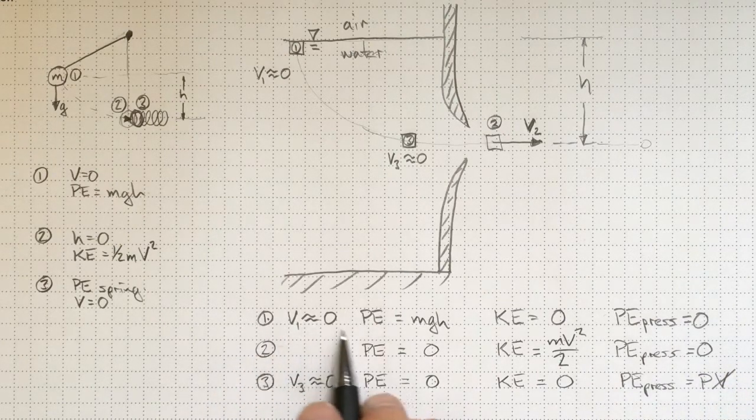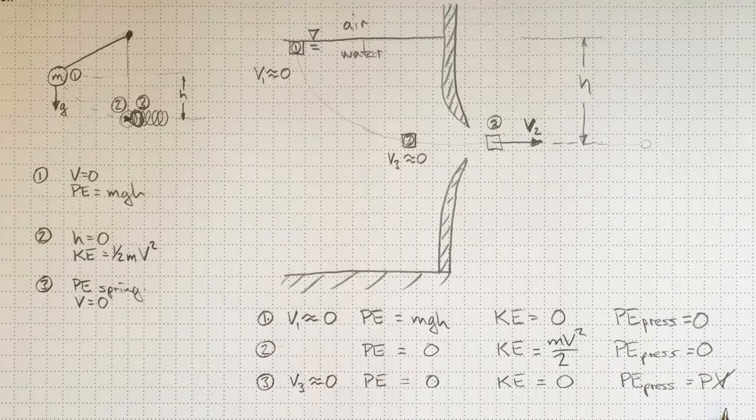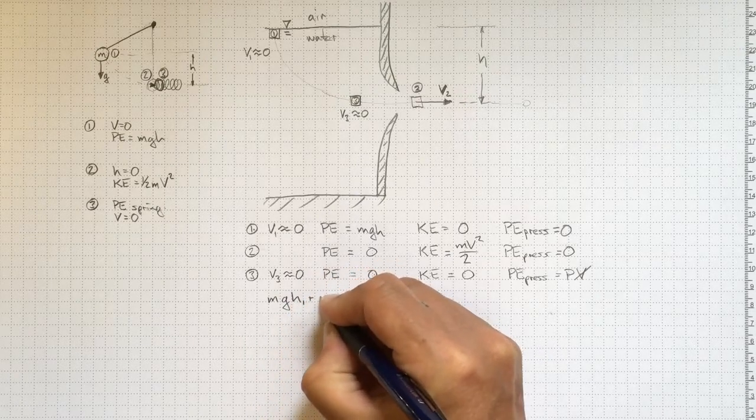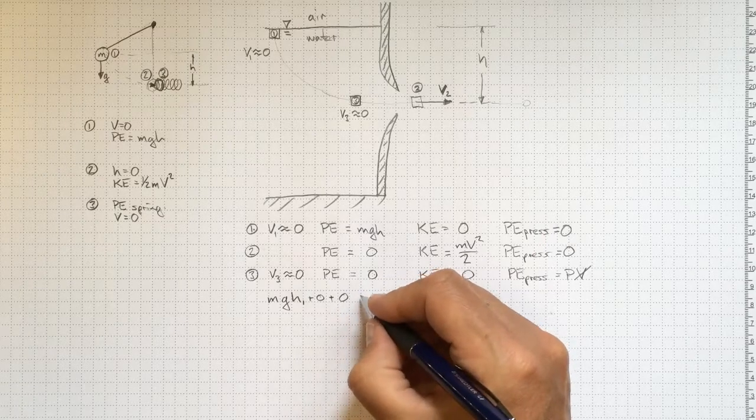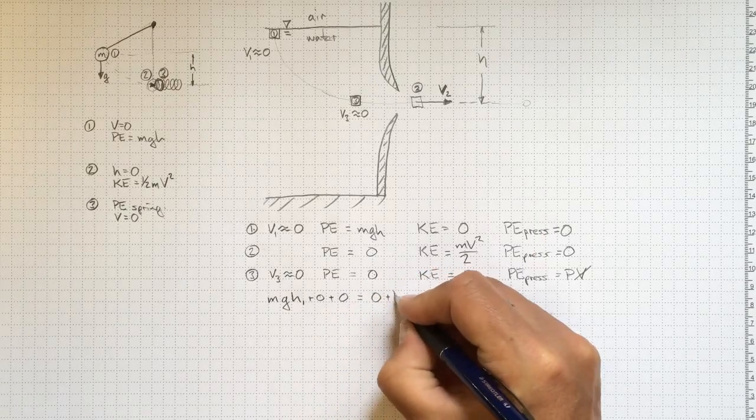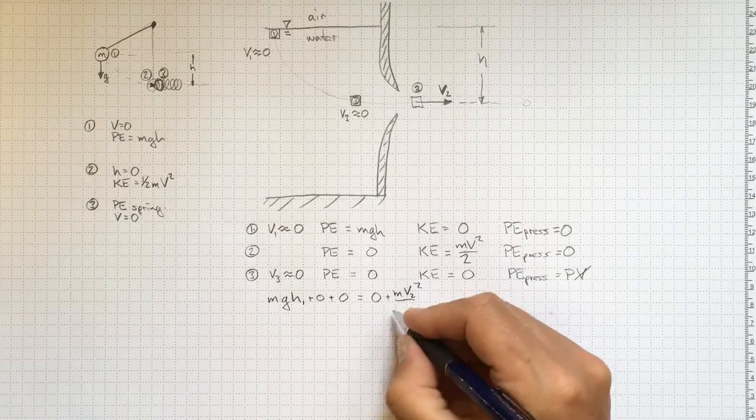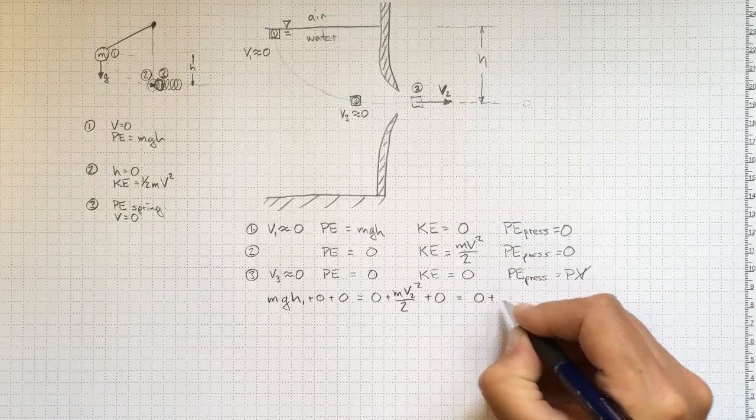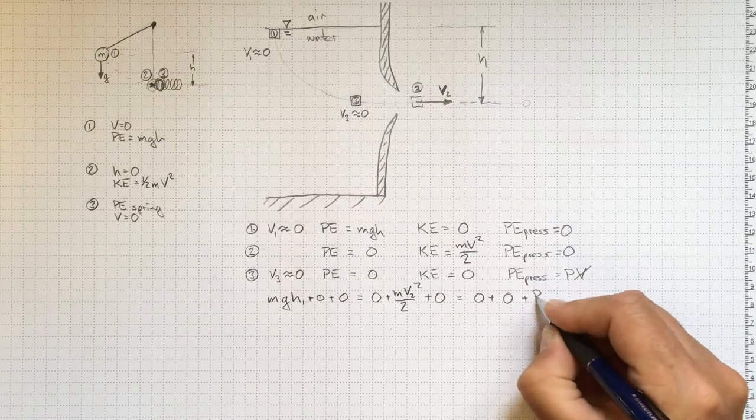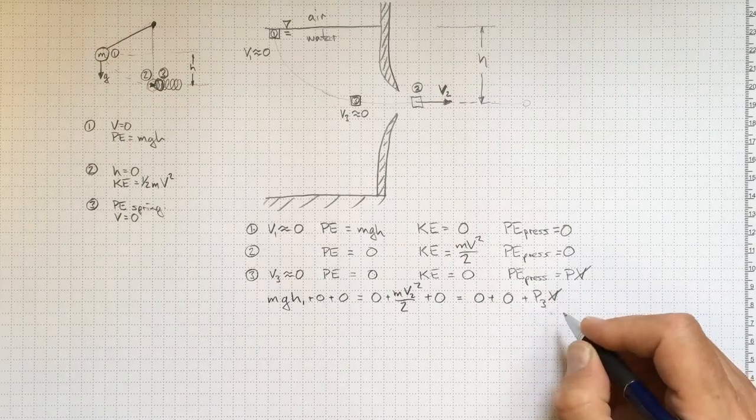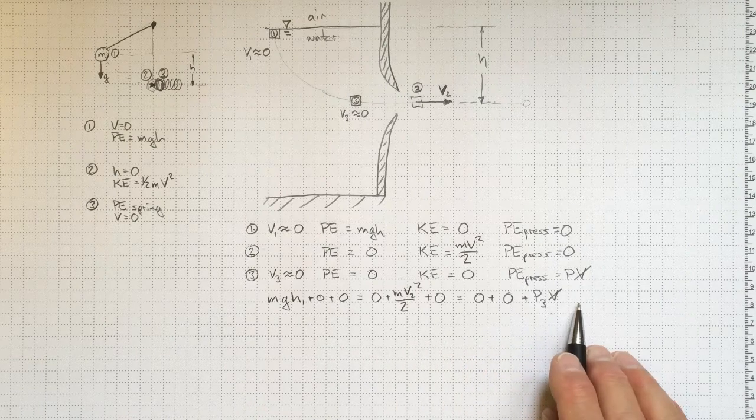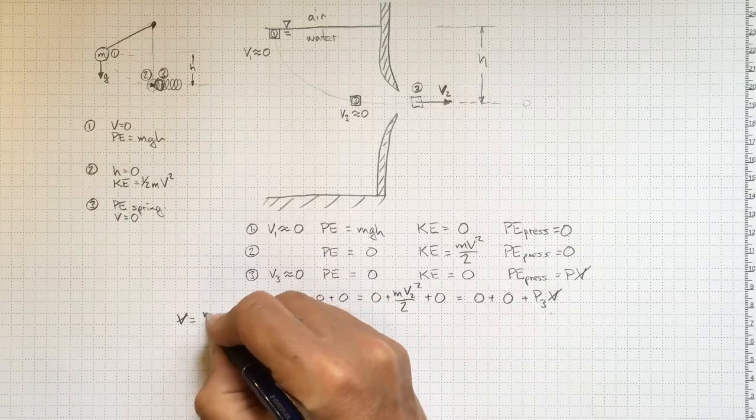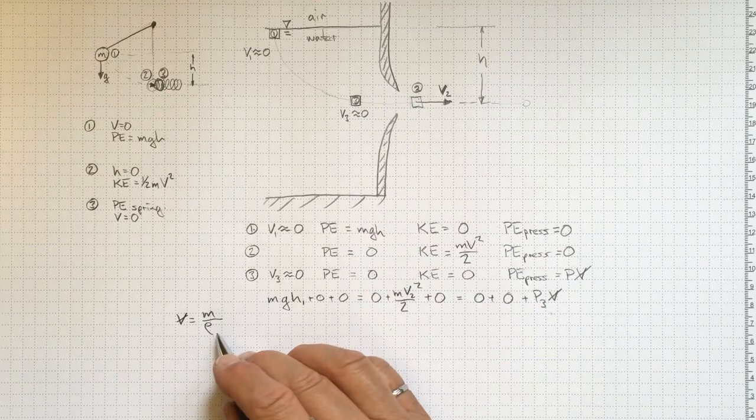So what we wind up with is that all three of these energy states should be the same thing. Mgh at location one plus zero plus zero should be equal to zero plus mv2 squared over two plus zero should be equal to zero plus zero plus whatever the pressure at three is times the volume. So each of these for the three different positions, three different modes of work. Now the volume will be the mass divided by the density, the mass of our little chunk of fluid divided by the fluid density.